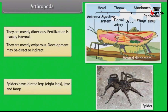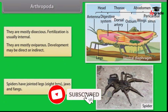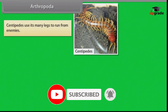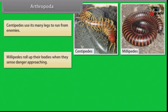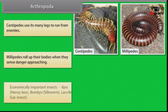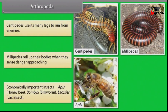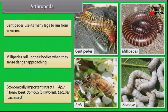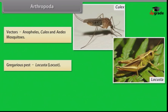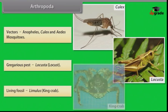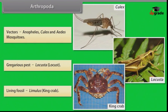Spiders have jointed legs — eight legs — jaws and fangs. Centipedes use their many legs to run from enemies. Millipedes roll up their bodies when they sense danger approaching. Economically important insects: Apis (honeybee), Bombyx (silkworm), and Laccifer (lac insect). Vectors: Anopheles, Culex and Aedes mosquitoes. Gregarious pest: Locusta (locust). Living fossil: Limulus or King Crab.